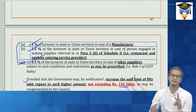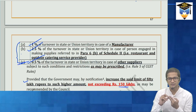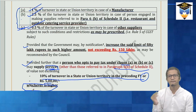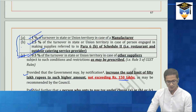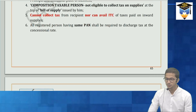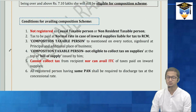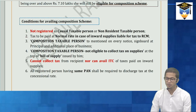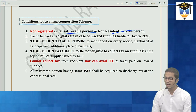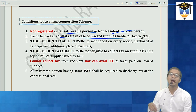Before moving to subsection 2, let me clarify Rule 5 and Rule 7. Rule 5 conditions: you should not have registration as a casual taxable person or NRTP — you must be a normal registered person. Tax on inward supplies attracting RCM must be paid at normal rate — the reduced composition rate benefit does not apply on RCM. If GTA service attracts 5%, you pay 5% on RCM, the reduced rate doesn't apply there.